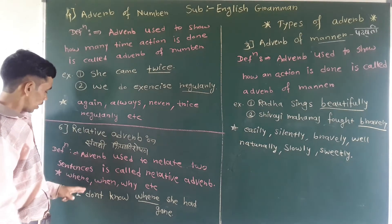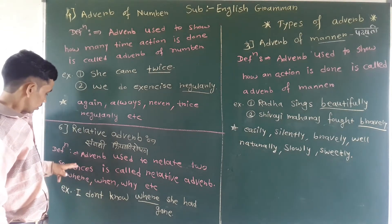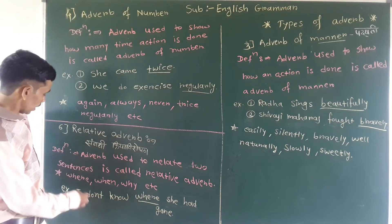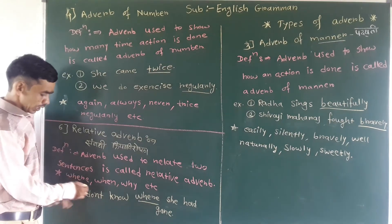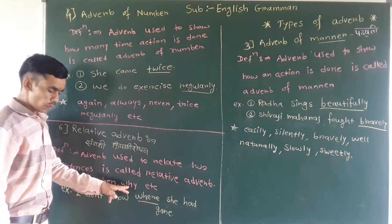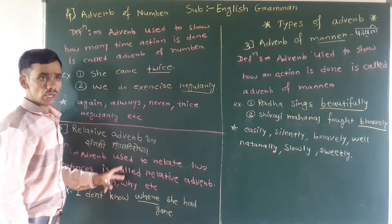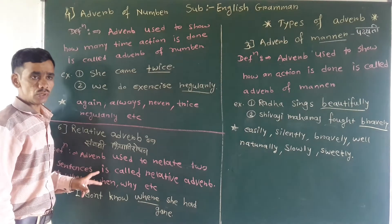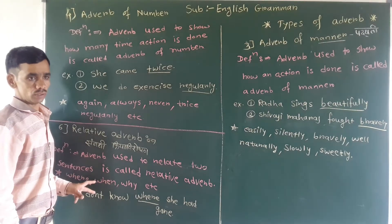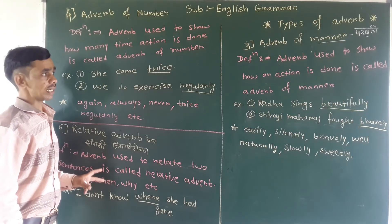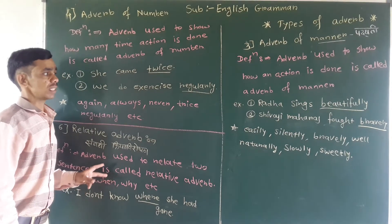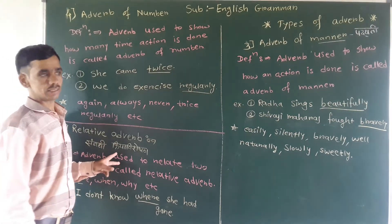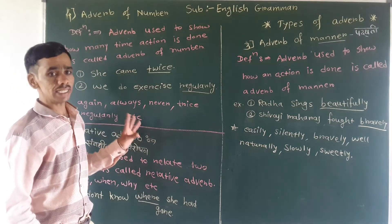And the relative adverbs are, for example, where, when, why. So we have to create examples by your own — write down at least three examples of each. Do you understand this?